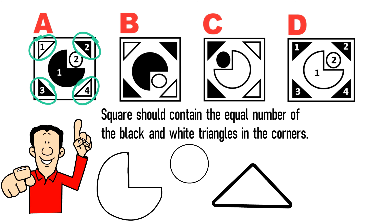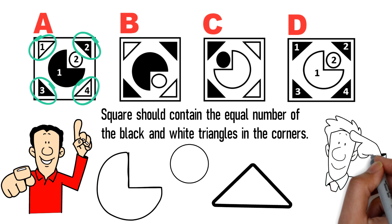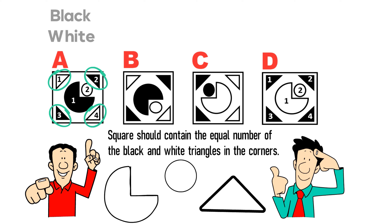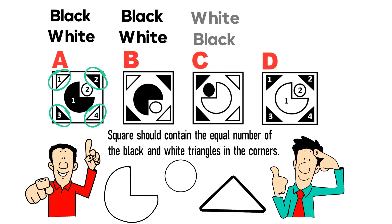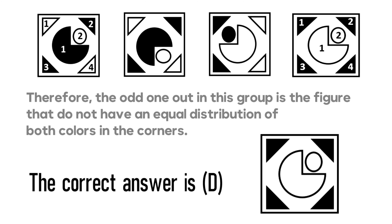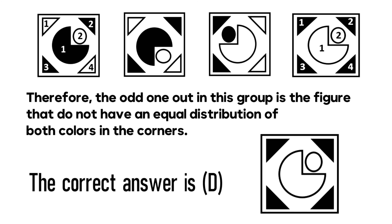The circles in this picture do not have a pattern — their primary goal is to confuse you. If you look at the circles closely, you see that the large-small circle pattern doesn't exist consistently: shape A has black-white, shape B has black-white, shape C has white-black, and shape D has white-white. Based on this, we should ignore the circles and focus on the triangles. The odd shape — the one that doesn't belong — is the one without equal distribution of black and white triangle colors in the corners. The correct answer is choice D.